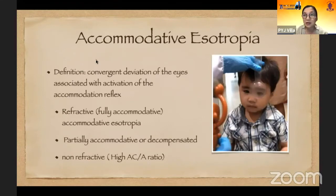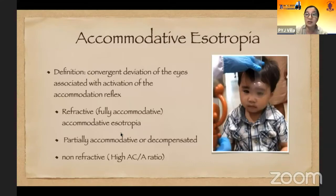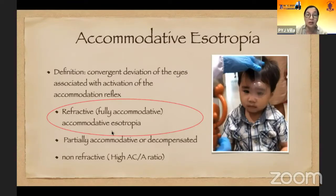As mentioned earlier by Dr. Fetty, I'll just again redefine what accommodative isotropia is all about. It is a convergent deviation of the eye associated with the activation of the accommodation reflexes. There are three kinds: refractive accommodative isotropia, partially accommodative isotropia or the decompensated type, and the non-refractive or the high ACA ratio type. But for tonight, I'll just be discussing the refractive accommodative isotropia.